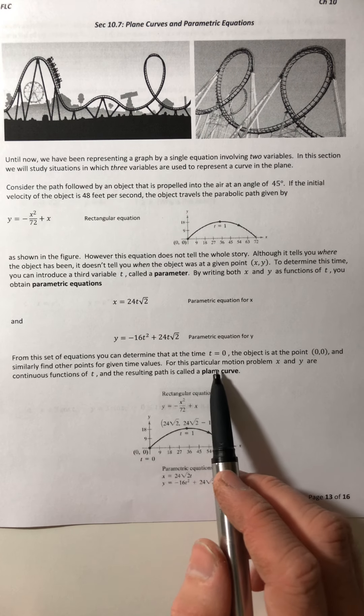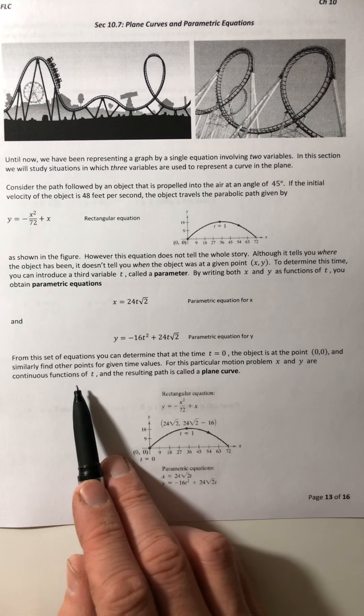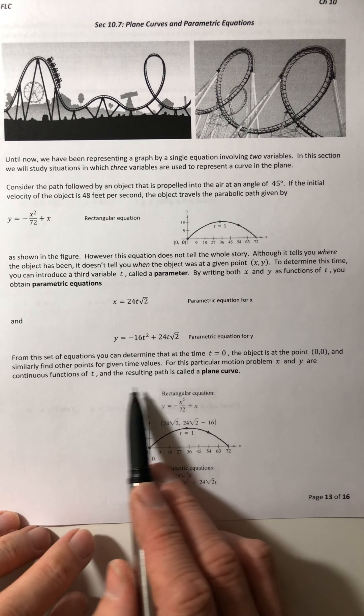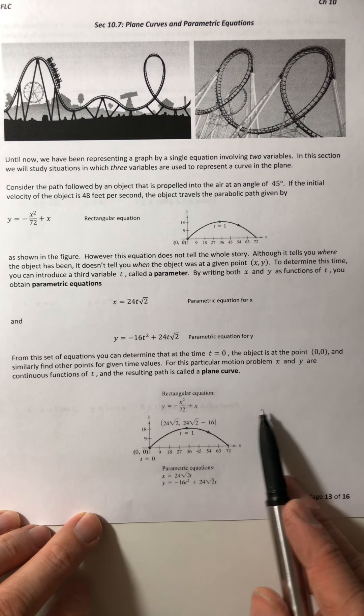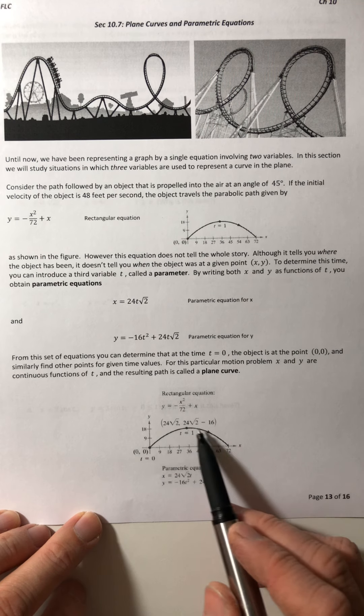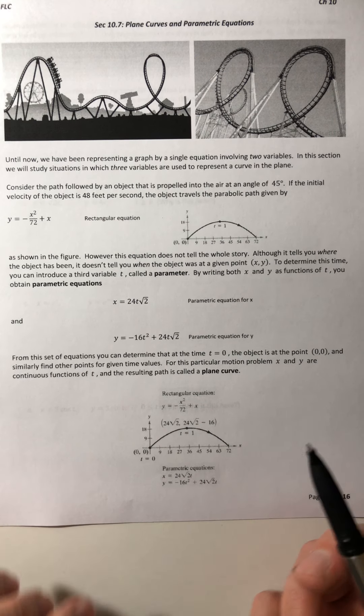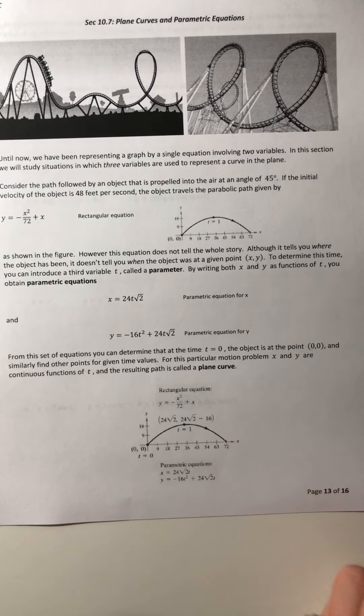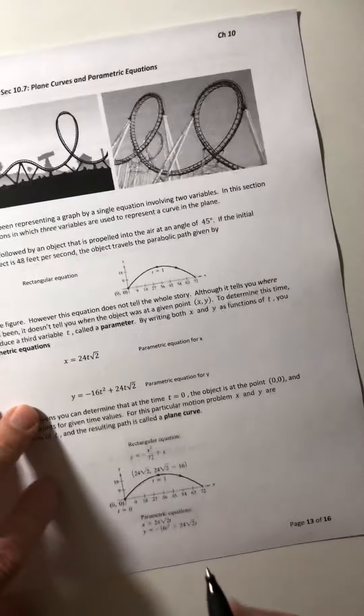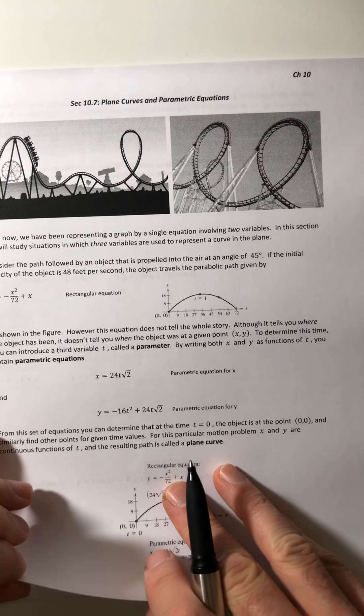For this particular motion problem, x and y are continuous functions of t, and the resulting path is called a plane curve. It's called a plane curve because it's a curve and it's on a plane. I know, sometimes these math things are so creative.